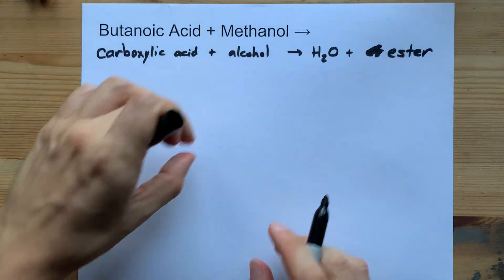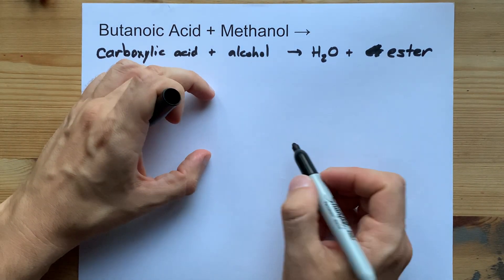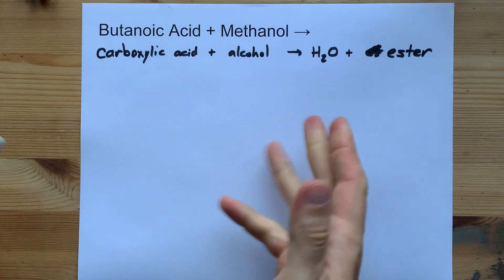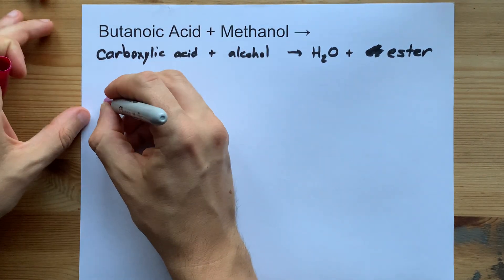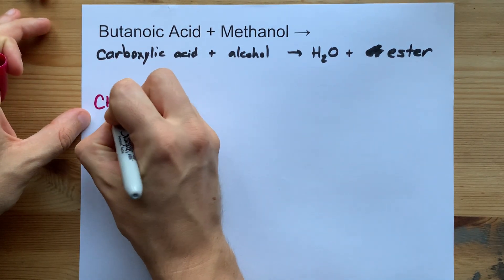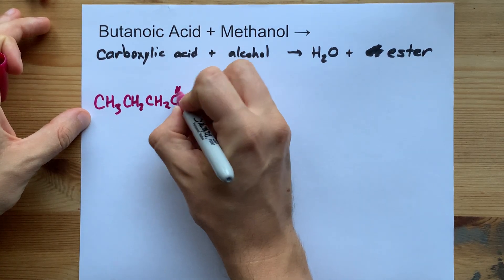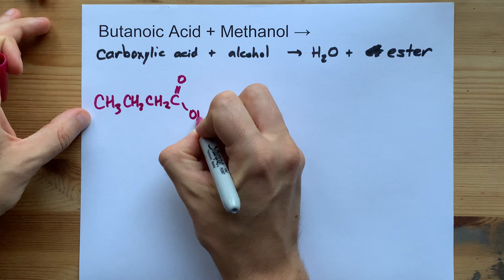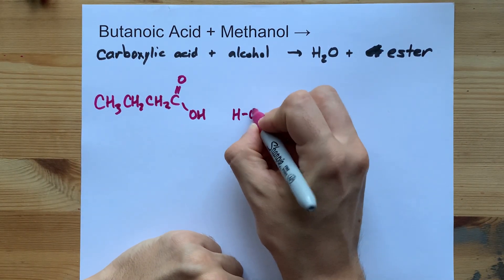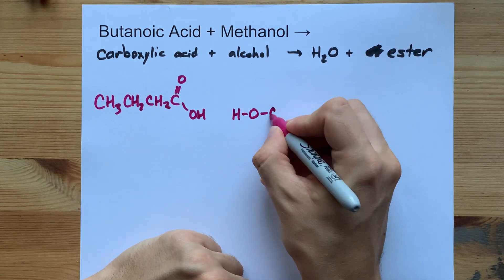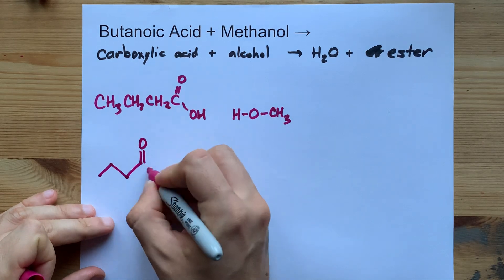An ester is when you have a double-bonded O connected to a carbon, and then that carbon is also bonded to another oxygen, but that oxygen has more carbon chain left with it. Butanoic acid is CH3CH2CH2C with a double-bonded O and an OH. Methanol is another alcohol that's H with O connected to a CH3. I could have drawn those as skeleton diagrams if you'd prefer.